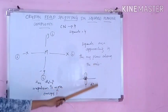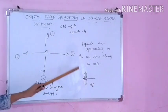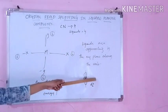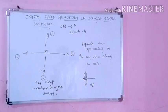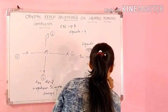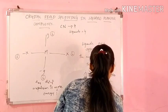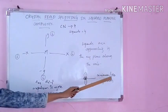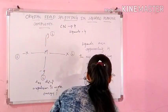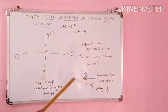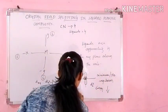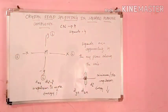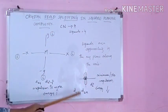Now the dz² orbital I have drawn here. Here there is no repulsion. Why? Because the ligands are approaching in only the xy plane — it is nowhere connected with the z-axis. So this dz² will be lower in energy, with minimum or no repulsion. Because it is not along the z-axis, your ligands are not placed along the z-axis. Hence energy will be very less. And the remaining d orbitals — dyz and dzx — even these will experience very lower energy.